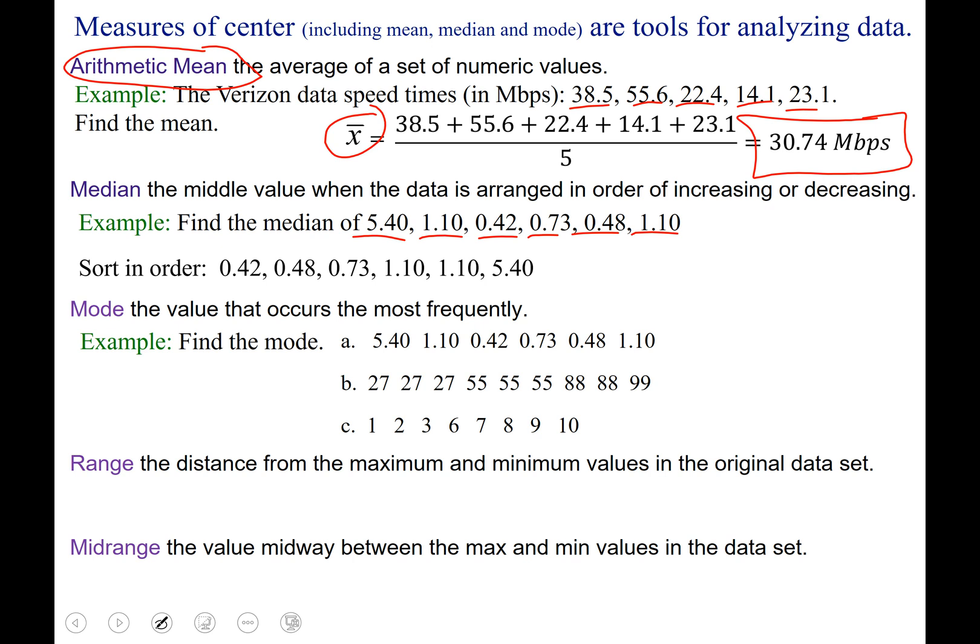Well, if I go from this end and this end, then this one and this one, then this one and this one, it looks like the middle would be right here, but there's no data value there. There's no middle data value. So what we do is we take the 0.73 and the 1.10, and we find their arithmetic average or median, and that gives us the median of this set of data, which is 0.915.